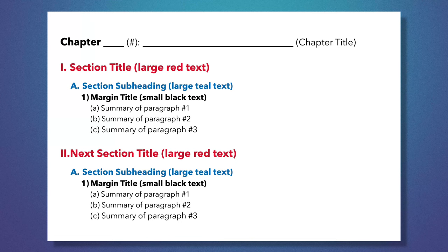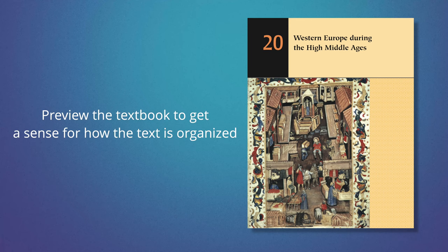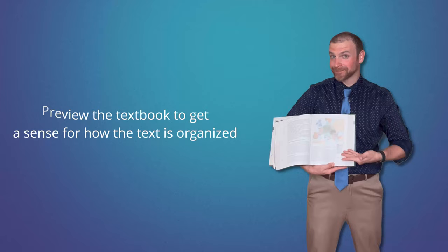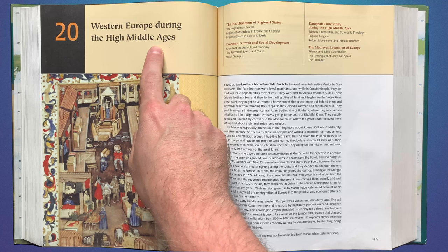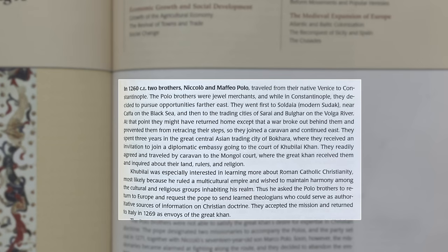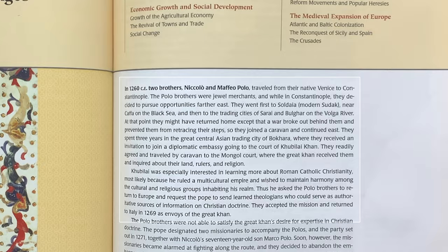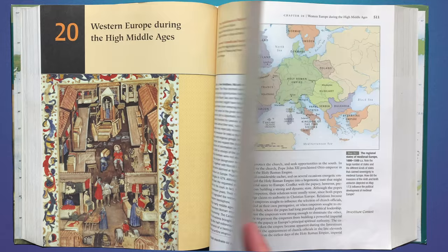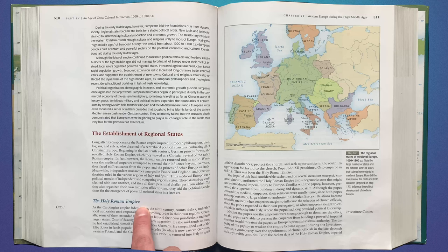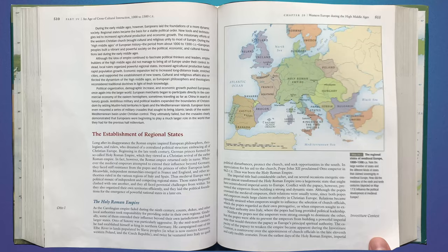Before we begin outlining, it's important to preview the textbook to get a sense of how the author organizes the text. This will help us decide which information will be assigned Roman numerals, letters, or numbers. For this exercise, I will be using chapter 20, called Western Europe during the High Middle Ages. As I flip through the pages, I notice the chapter begins with a story about Niccolo and Maffiopolo and their experiences with the Mongols in Central Asia. I also see a red heading titled The Establishment of Regional States, a smaller blue heading in italicized font called The Holy Roman Empire, and small titles in the margins: Otto I, Investiture Contest, and Frederick Barbarossa.